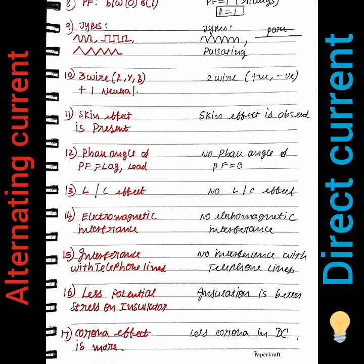There are different types of AC current waveforms. These types include sinusoidal, trapezoidal, square-wave, and triangular-wave.